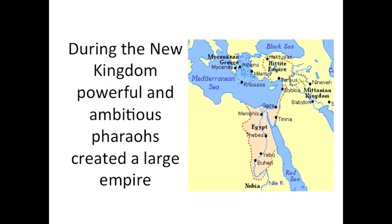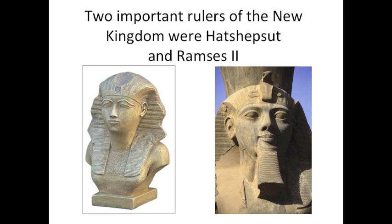During the New Kingdom, powerful and ambitious pharaohs created a large empire, as you can see on this map. This age of conquest brought Egypt into greater contact with Southwest Asia and other parts of Africa, leading to increased trade but also increased conflict. Two important rulers of the New Kingdom were Hatshepsut and Ramses II. Hatshepsut was one of the first female rulers of known history, ruling from 1503 BC to 1482 BC and encouraging trade along the Red Sea and Africa. Ramses II ruled from 1290 BC to 1224 BC and pushed Egyptian rule northward as far as Syria and southward further into Nubia.